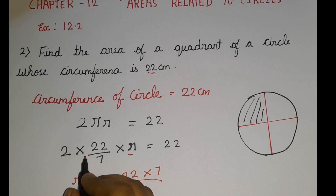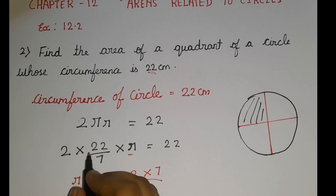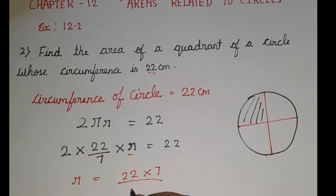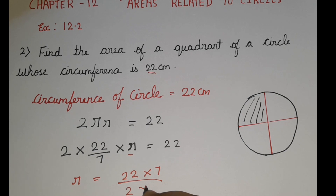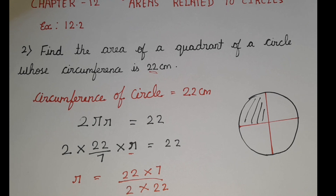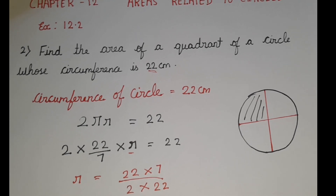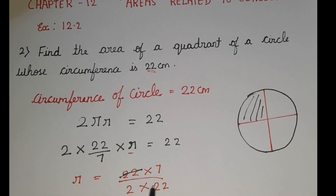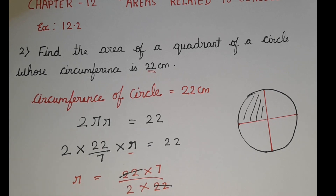And here we have 2 × 22 in multiplication. When it comes to this side, it changes into division. So 2 × 22. Now we can actually cancel 22 and this 22.